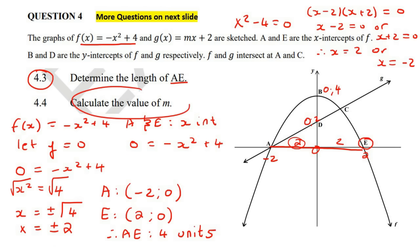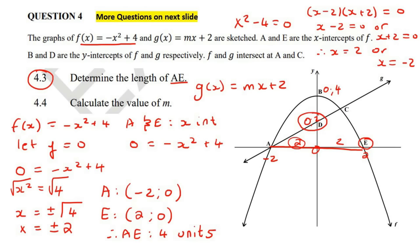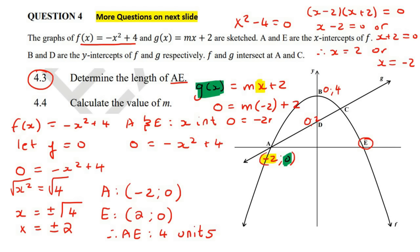This question says calculate the value of M. G of X equals MX plus 2. You just need a specific point on the straight line. We can use the point (negative 2, 0) — negative two is the X-value and zero is the Y-value. Plugging in: 0 equals M times negative two plus two, giving negative two M equals negative two, so M equals one.